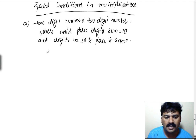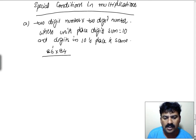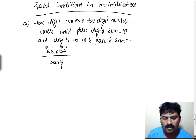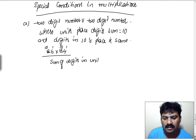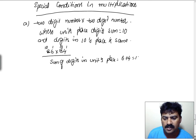Let us take an example: 86 into 84. If you observe this example, it has ones place and tens place. The sum of digits in units place is six plus four, which is ten — so the first condition is fulfilled.